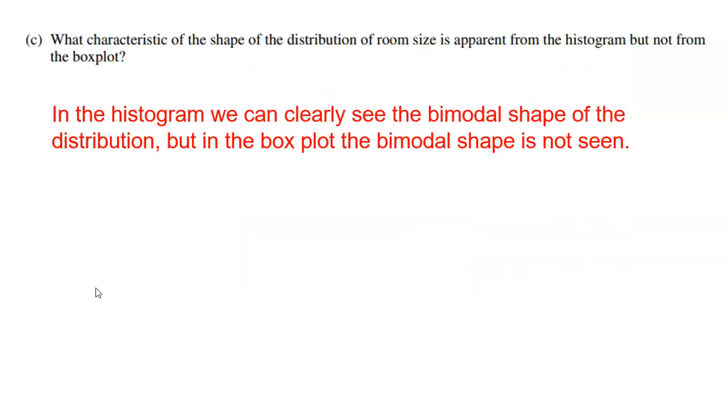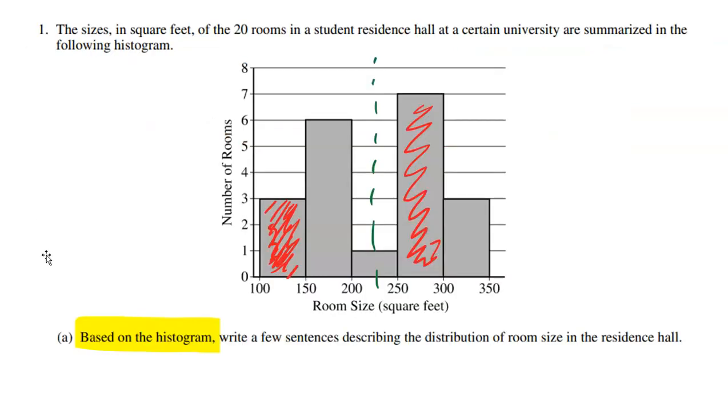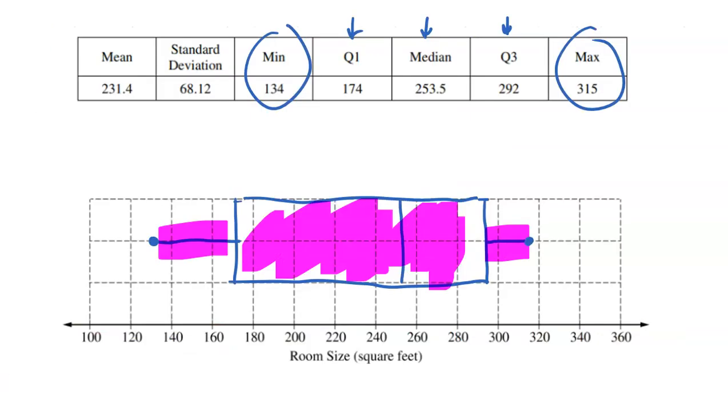Now, the final question says, what characteristic of the shape of the distribution of room size is apparent from the histogram, but not the box plot? The bimodal shape. So in the histogram, we clearly see the bimodal shape, the two chunks, lower and higher. Maybe it's like guys' rooms and girls' rooms. Maybe girls' rooms are a little bit bigger. So we see a chunk around the girl rooms, lower chunk there at the guy. The guy rooms are just a little bit smaller. I mean, I don't know. I'm just throwing that out there. But we clearly see that bimodal shape in the histogram. Let me show you that again. There it is. And then when we made that box plot a moment ago, we did not see that. We don't see two chunks there. We just see the spread of the four quarters of the data. We don't actually see that bimodal shape in a box plot.